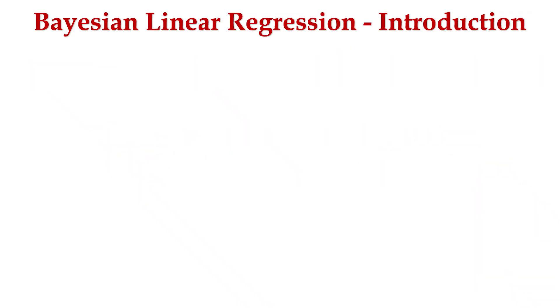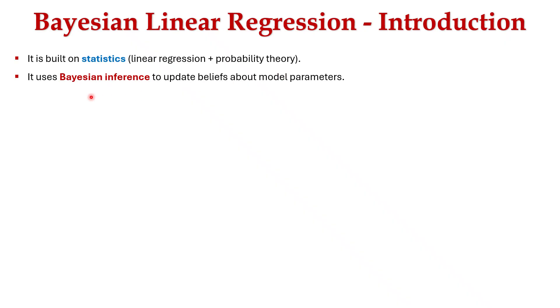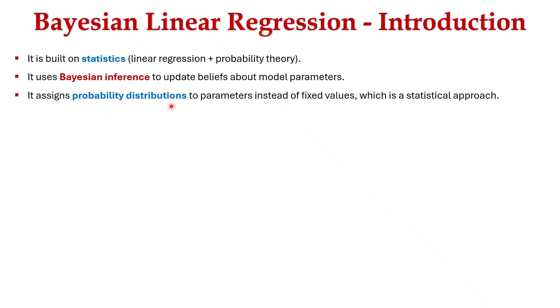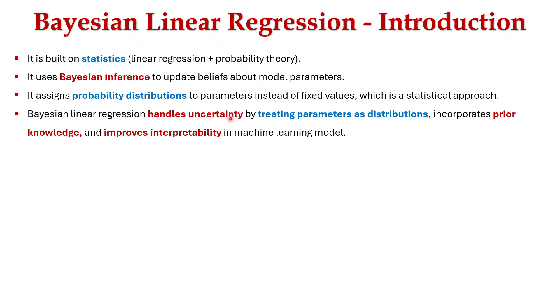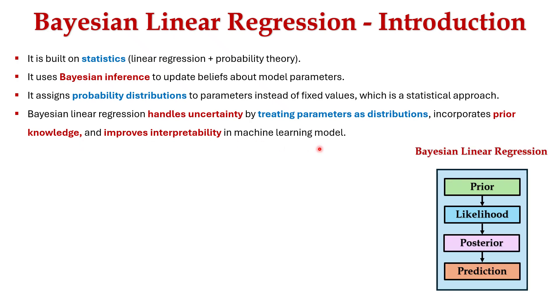As an introduction, Bayesian linear regression is built on statistics with a combination of linear regression and probability theory. It uses Bayesian inference to update beliefs about the model parameters. It assigns probability distributions to parameters instead of fixed values, handles uncertainty by treating parameters as distributions, and incorporates prior knowledge to improve interpretability in machine learning models.